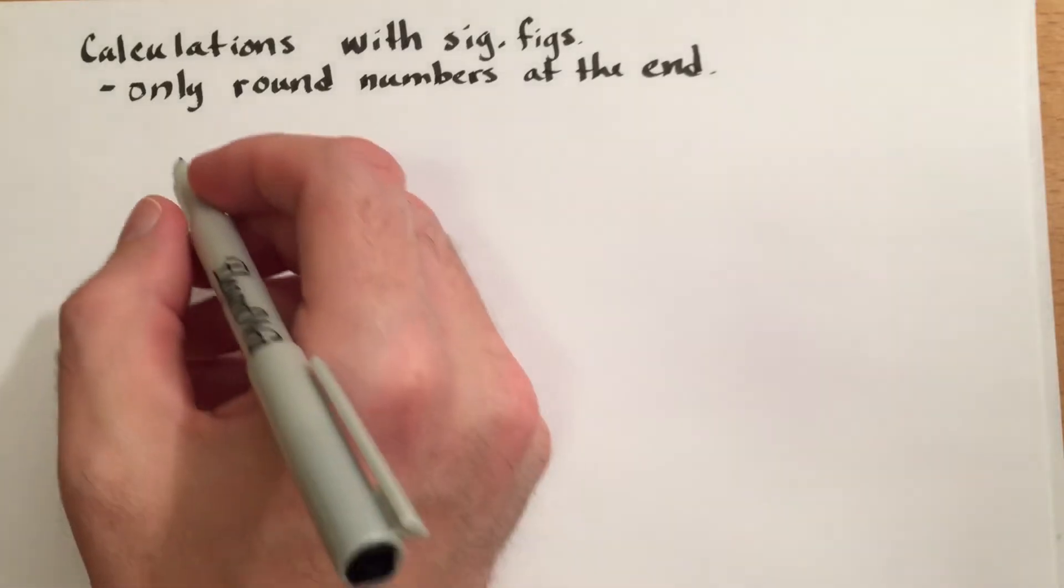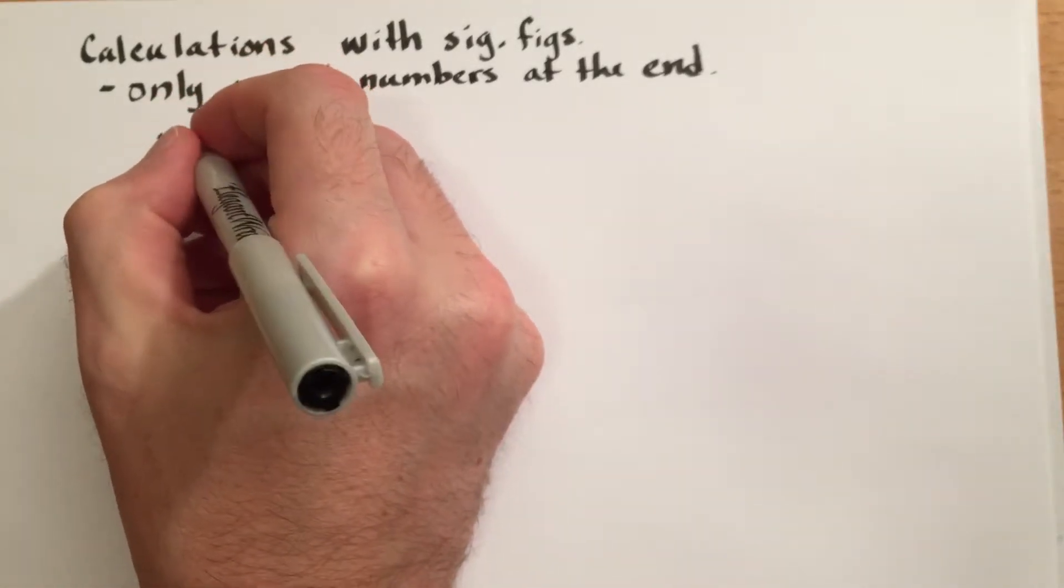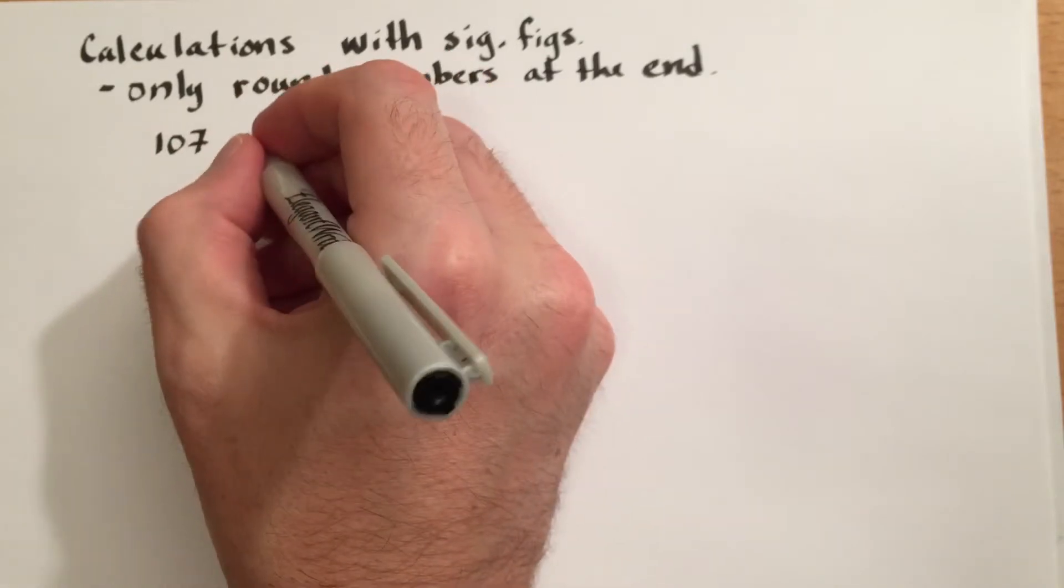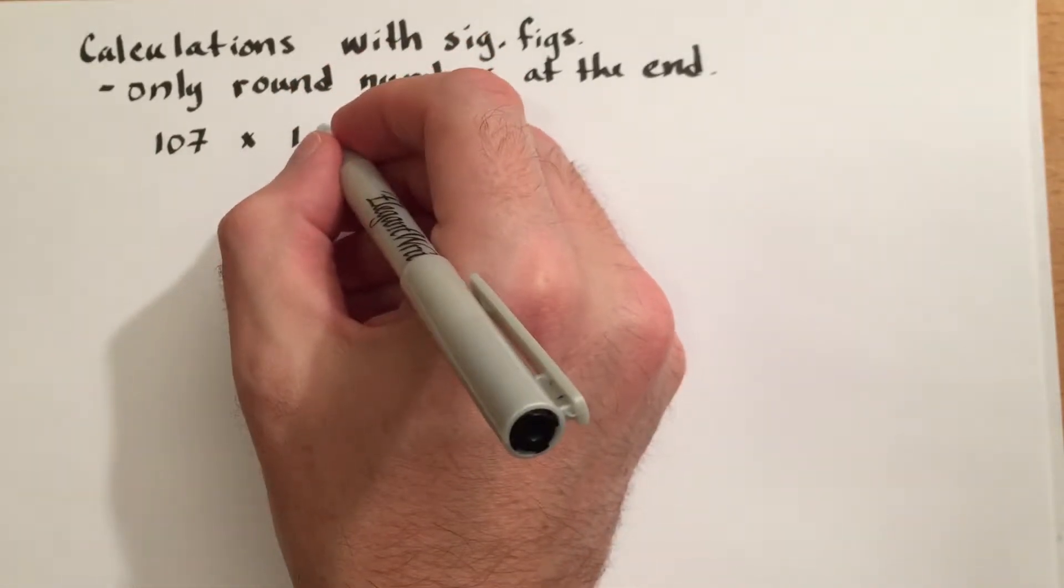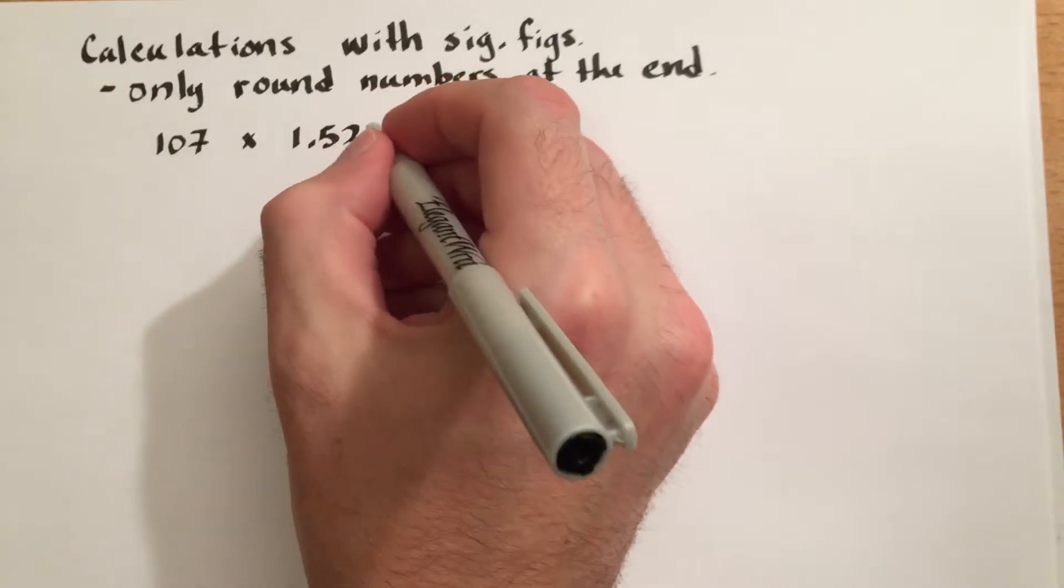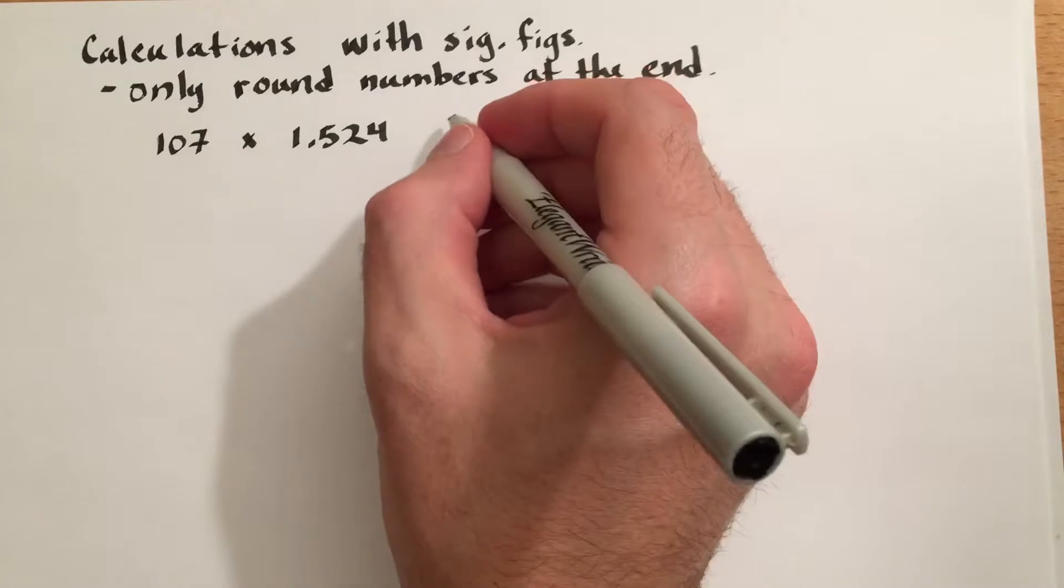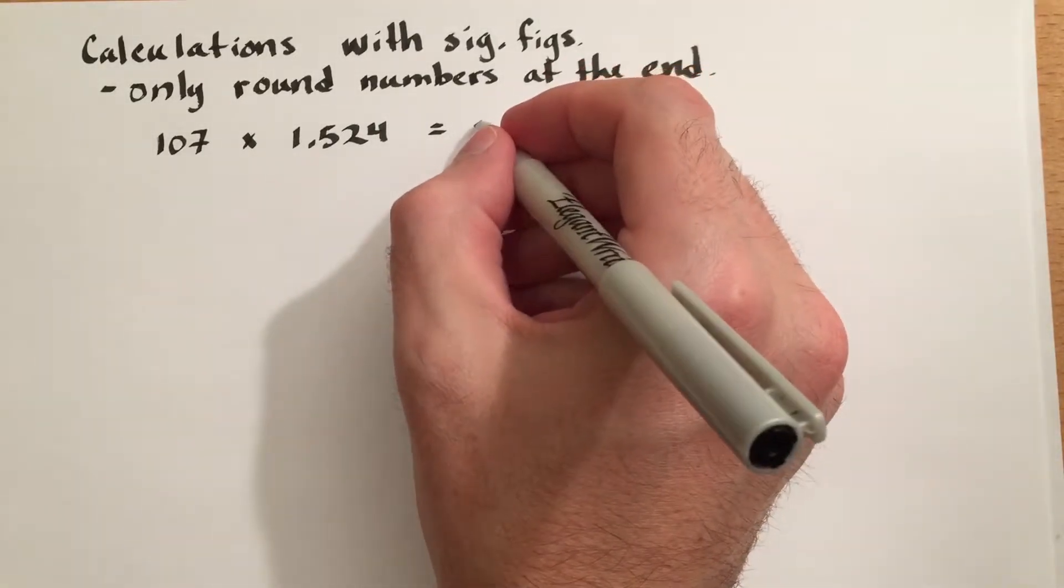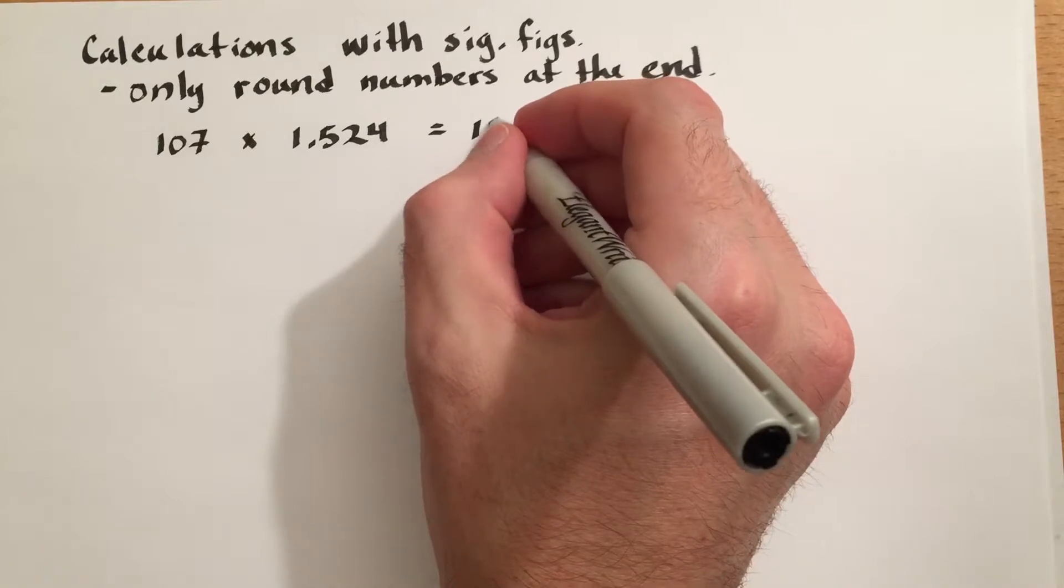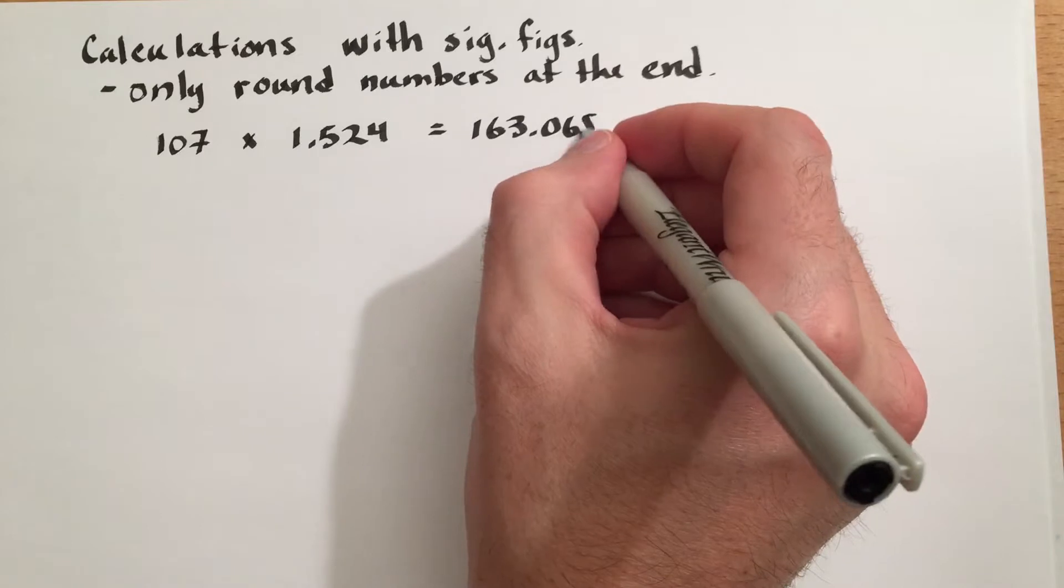As an example, let's look at a simple multiplication of 107 multiplied by 1.524. If we put this in a calculator, we will see that it equals 163.068.